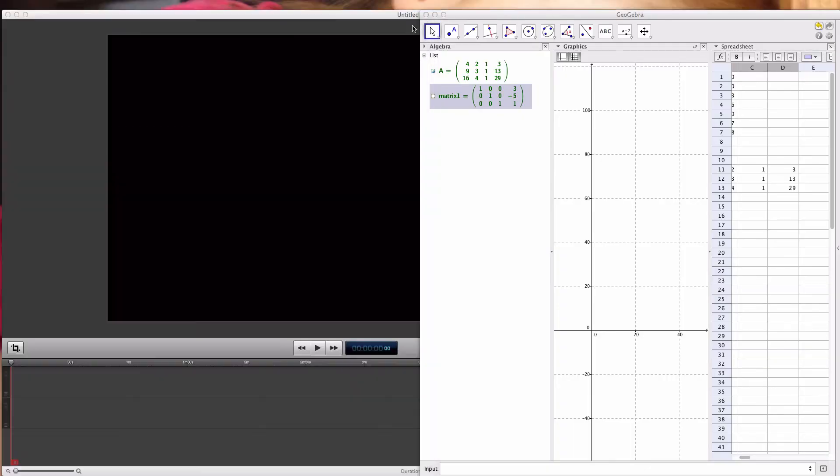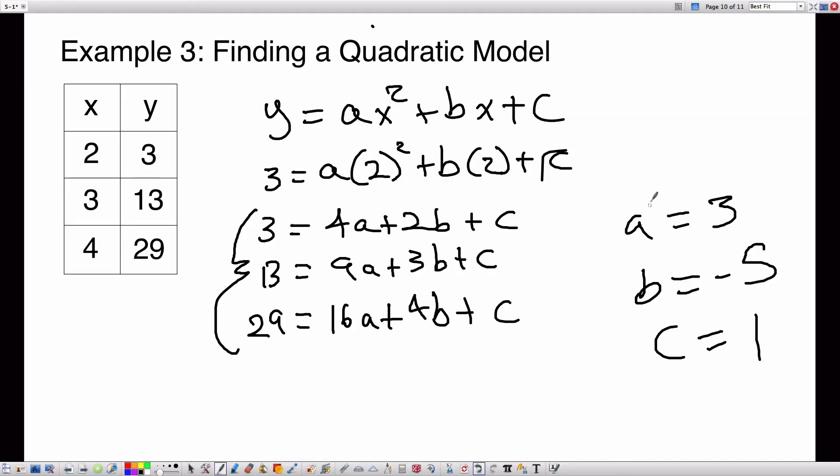Let's put this back in full screen mode. Now that I've found A, B, and C, I can plug them back into this equation, and I have Y is equal to A times X squared plus B, which is negative 5, so I could say minus 5X plus C, which is 1. And I have a quadratic model from these three points. So what you do is you take the points, you plug them into this equation for X and Y, then you solve the system of equations to find A, B, and C.